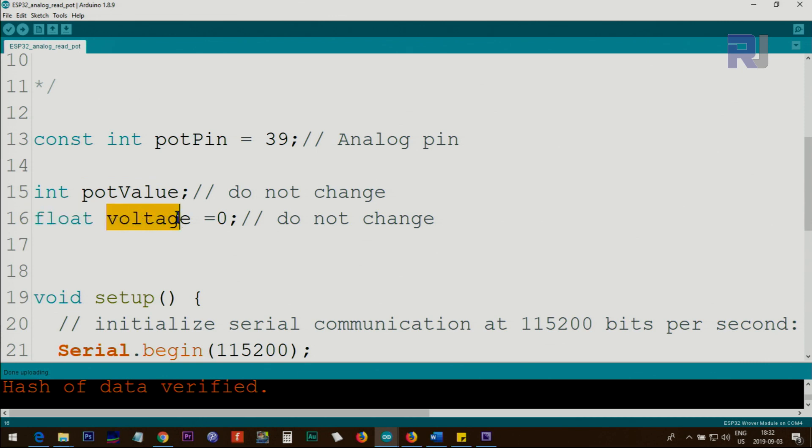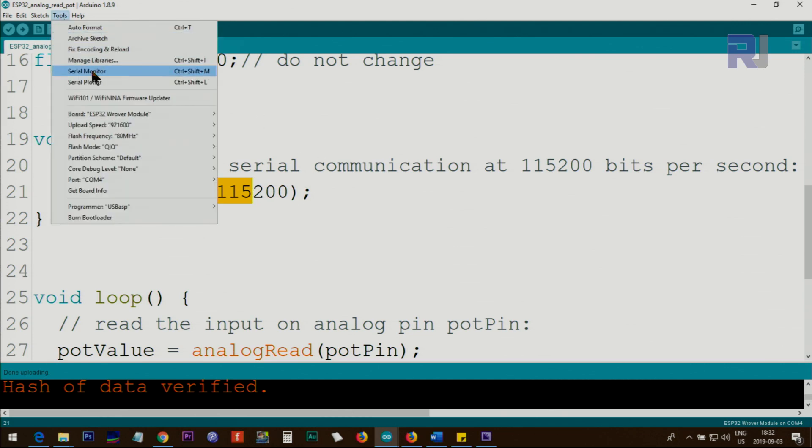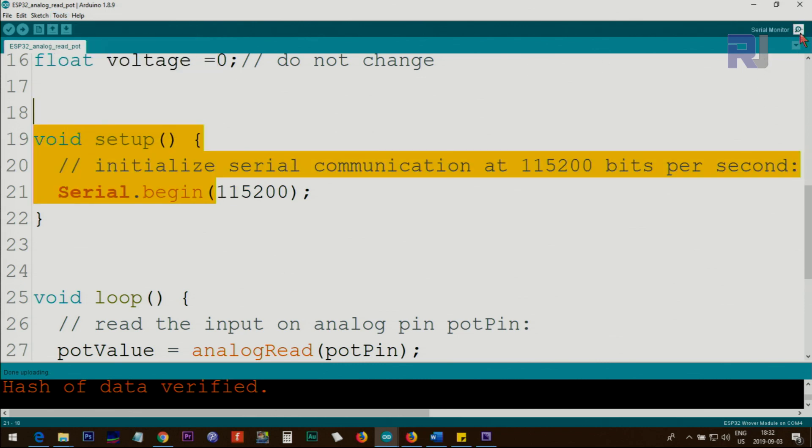Inside the setup we initialize the serial monitor with 115200 bits per second, which I'm going to show you in the serial monitor. When you click Tools > Serial Monitor or Ctrl+Shift+M, or if you click on this icon on the right top corner, I'm going to show you how to set this.